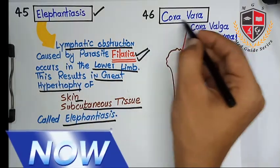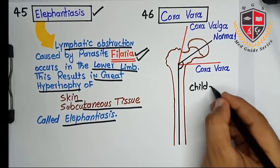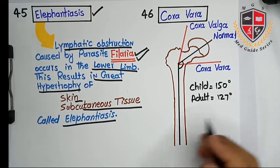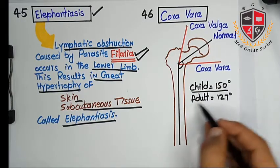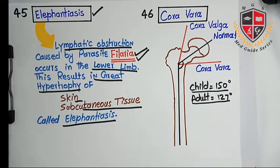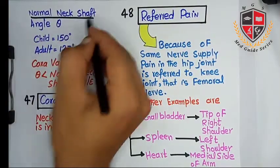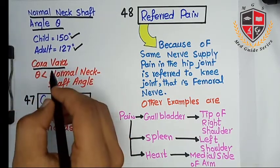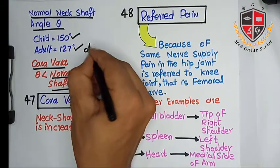The next clinical topic is coxa vara. The normal neck shaft angle in a child is 150 degrees and in an adult is 127 degrees. The neck shaft angle is the angle between the neck and the shaft of the femur. Coxa vara is a clinical condition in which there is a decrease in the normal neck shaft angle, and it causes difficulty in walking.